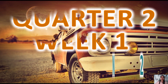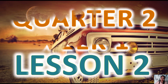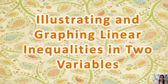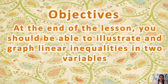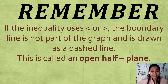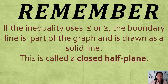After we defined and differentiated linear equations in two variables from linear inequalities in two variables, we can now illustrate and graph linear inequalities in two variables. Remember: if the inequality uses less than or greater than, the boundary line is not part of the graph and is drawn as a dashed line. This is called an open half-plane.